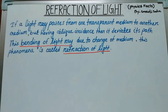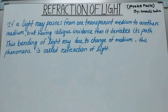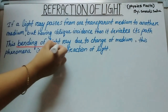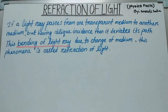So let's understand refraction of light. The definition of refraction of light: if light passes from one transparent medium to another transparent medium with oblique incidence, it deviates from its path. This bending of light due to the change of medium is called refraction of light. In other words, the phenomenon of bending of a light ray due to the change of medium is known as refraction of light.